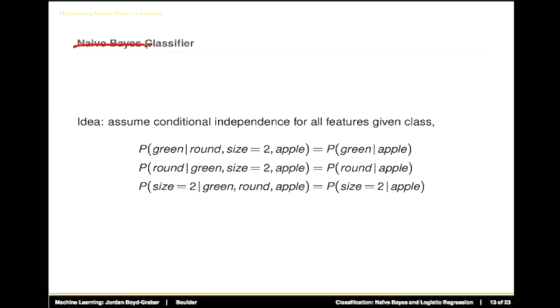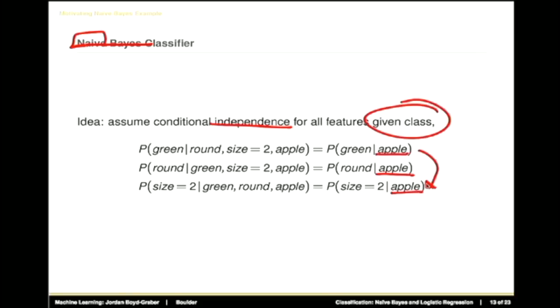The central way that naive Bayes is actually naive: we have various features we can observe — in our fruit example, color, shape, and size — and we assume they're all independent given the class. Given that it's an apple, we have some probability of it being green, some probability of it being round, some probability of it being size 2, and we assume they're all independent even though this is patently false. Once we know an apple is green, the size tends to be smaller — but we assume independence anyway.